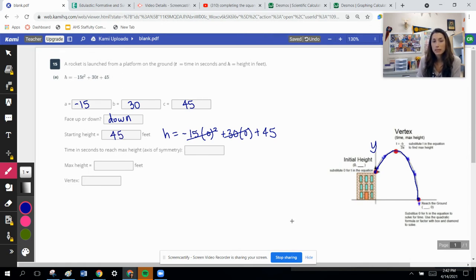We want the time in seconds to reach the maximum height. Remember that is our axis of symmetry, x equals negative b over 2a. That's this line here. This line here will help us kind of figure out the time in seconds that it takes. So let's do t equals, because we're not doing x equals, this graph is, instead of x and y, rather it's t and h, time and height. So time in seconds to reach maximum height.